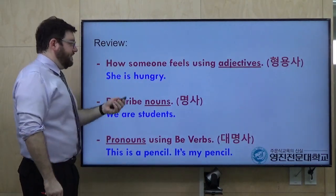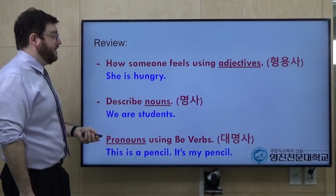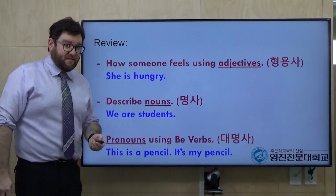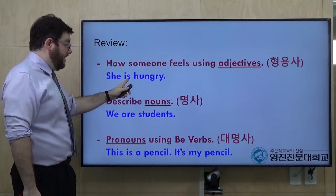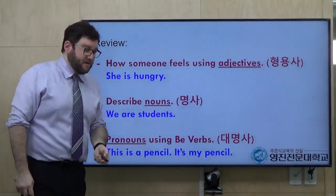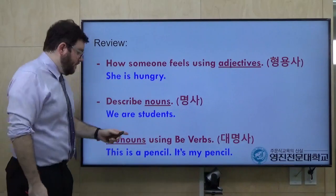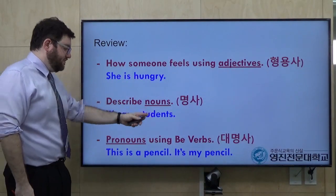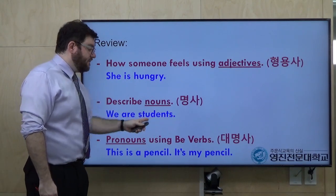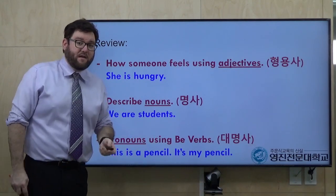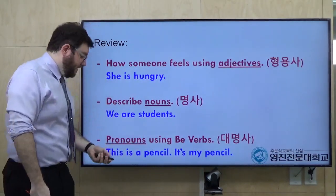So let's review, students. Today we studied B-verbs and we learned how someone feels using adjectives — 형용사. For example: she is hungry — 'she' is the pronoun, 'is' is the B-verb, and 'hungry' is the 형용사. We also studied B-verbs with nouns together: 'we are students' — 'we' is the pronoun, 'are' is the B-verb, and 'students' is the noun.